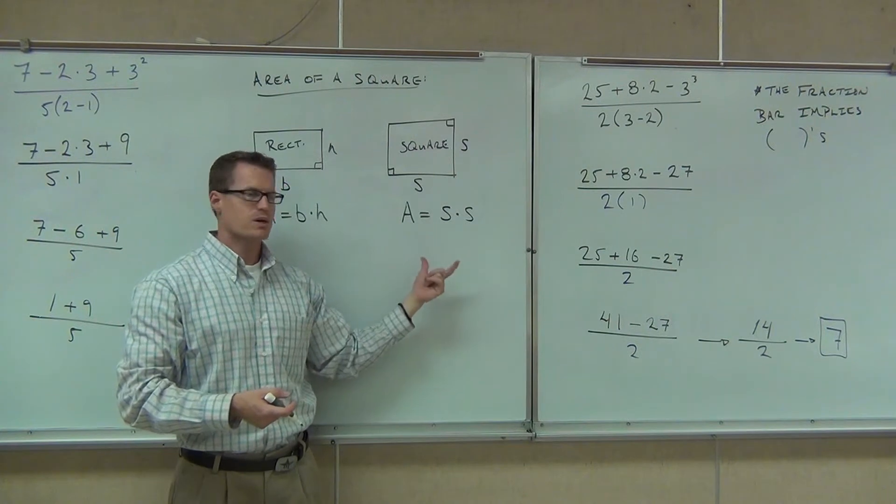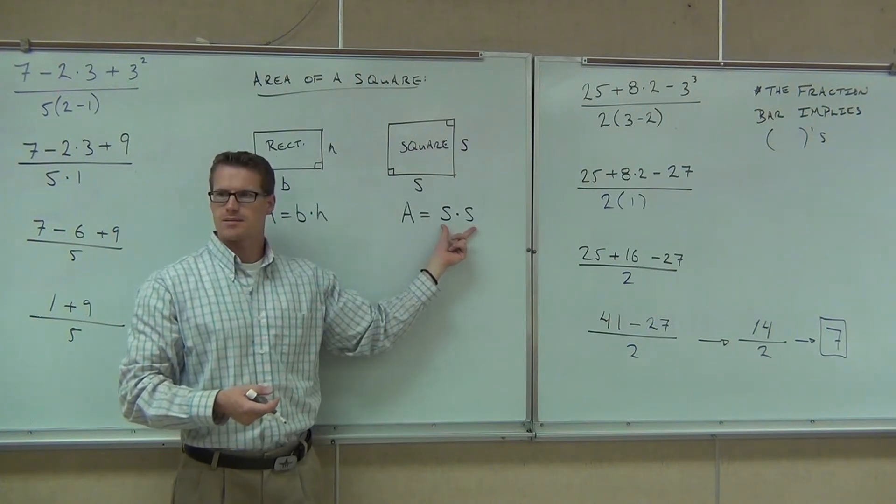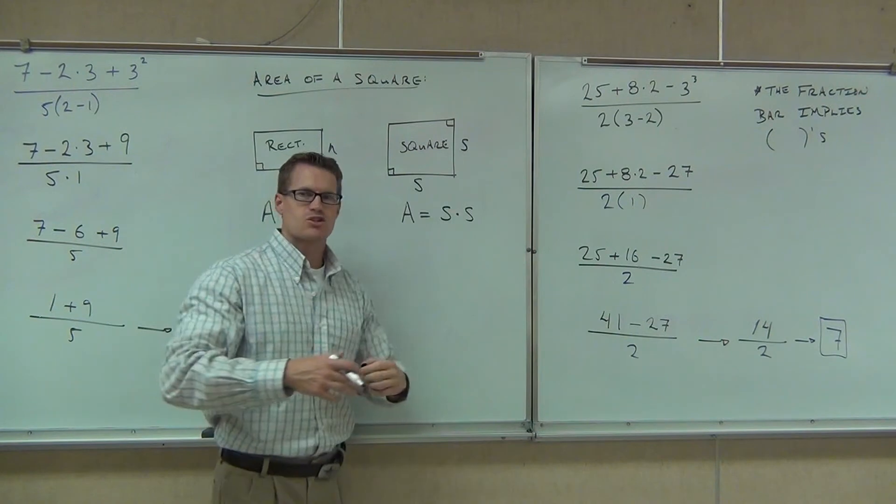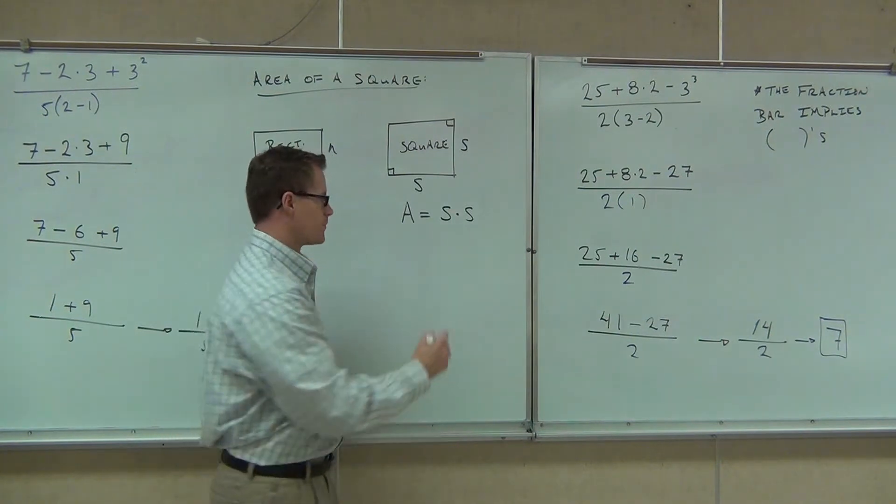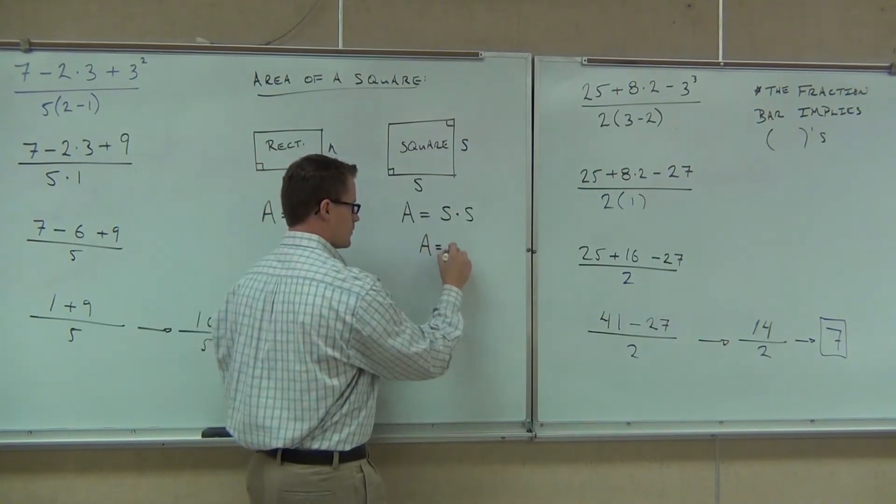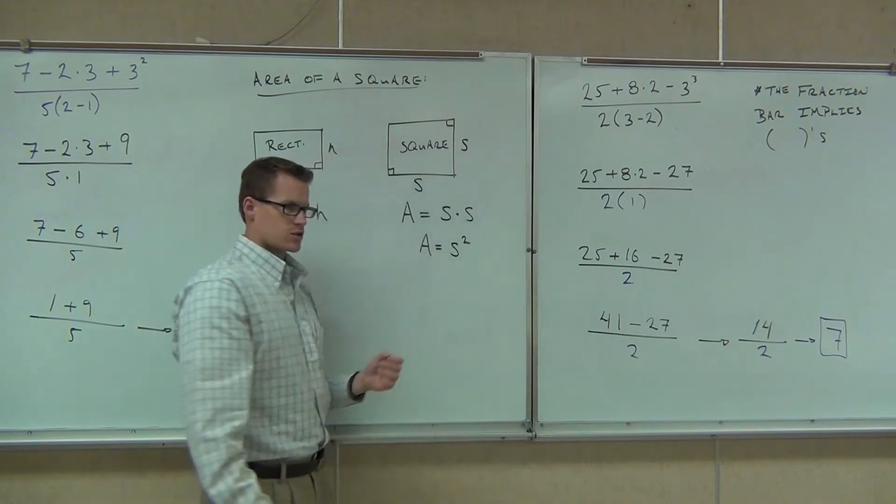Is there a different way we can write S times S? S squared. S squared. Perfect. That's where we actually get the word square from.